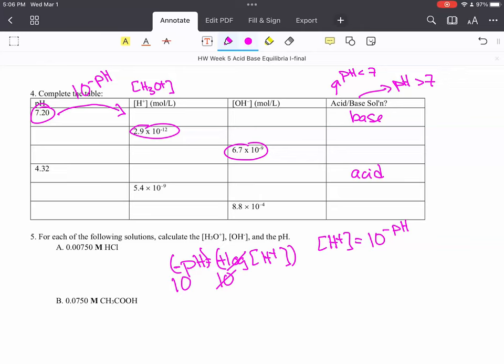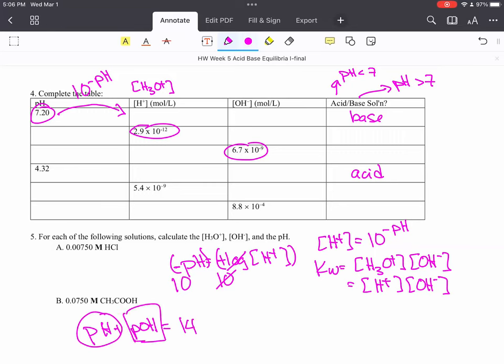From there, there's a couple different ways to go. You can use that Kw equals concentration of hydronium or H plus times concentration of hydroxide. You can also use that if you have the pH, you can say pH plus pOH equals 14. You have the pH, so you can find the pOH. And then use this equation similar to the one we just derived, concentration of hydroxide equals 10 to the minus pOH.